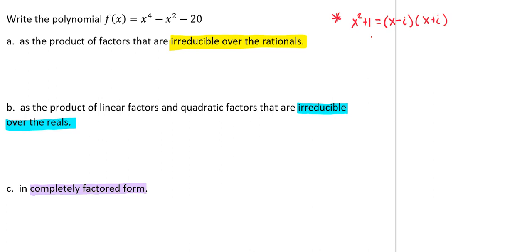But on the other hand, if we look at the quadratic x^2 - 2, this is irreducible over rationals, but it's reducible over the reals.